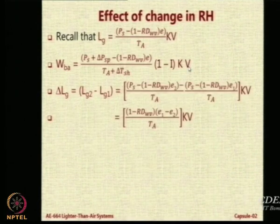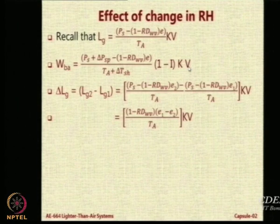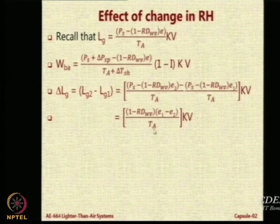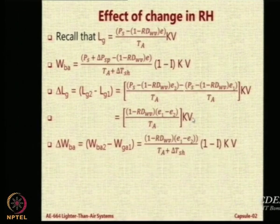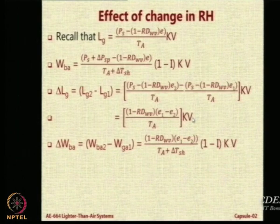If you take the difference of the gross lift after and before, that is Lg2 minus Lg1, you get the expression as shown. In this expression you can see that the P_s terms actually cancel out. What will be remaining is just 1 minus RDWV into E1 minus E2. Remember it is not E2 minus E1 because the minus sign is taken care of by changing. The ambient temperature remains the same; we assume no change in any other parameter and volume also remains the same externally. So the change in the ballonet air will correspondingly be obtained as 1 minus RDWV into E1 minus E2 into 1 minus I into KV by Ta plus T_sh.